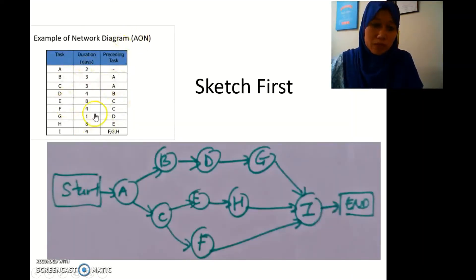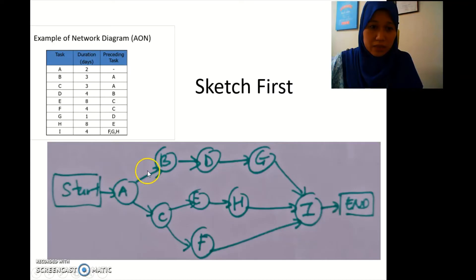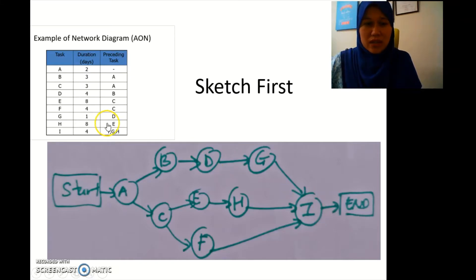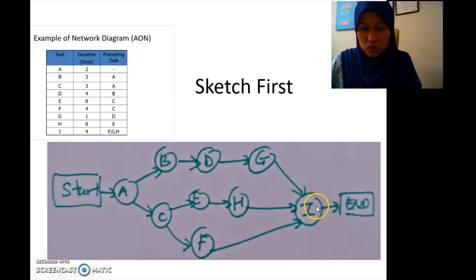From this information we start with the start box, then A, and A goes to B. We find B here, and A also goes to C, then B goes to D, C goes to E, and so on. You have to connect all the tasks using arrows. At the end we have I, which comes from F, G, and H, and then we close it with an end box.